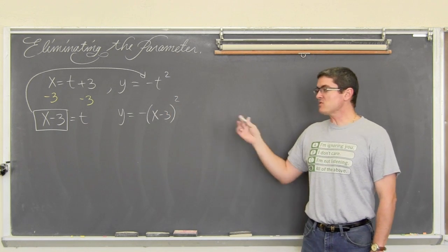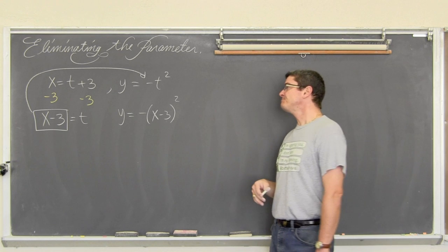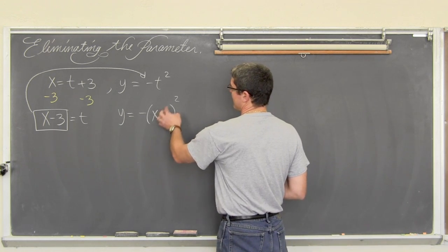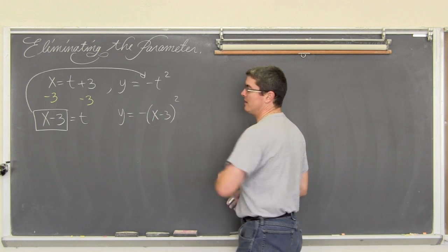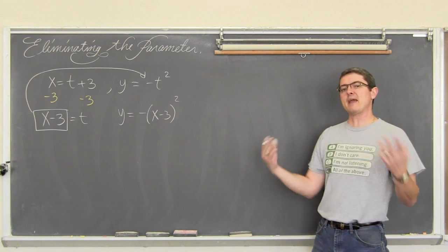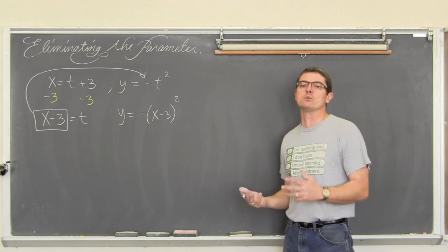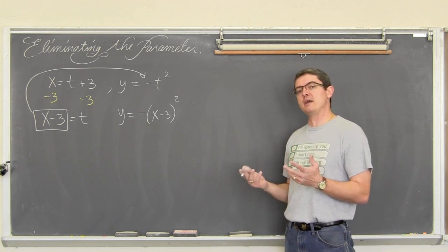That is y in terms of x. I could take this binomial and FOIL it together or distribute it out. I hate the word FOIL, sorry about that. But I am going to take this binomial and distribute it or square it and just expand it and have it in general form y equals ax squared plus bx plus c.